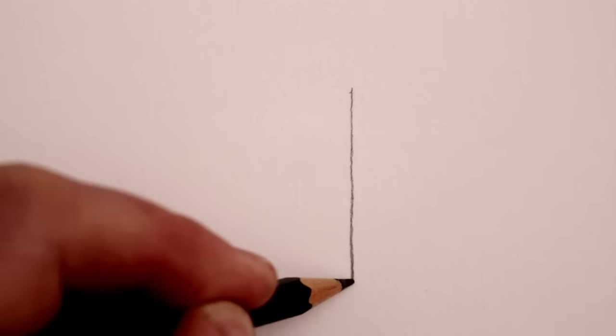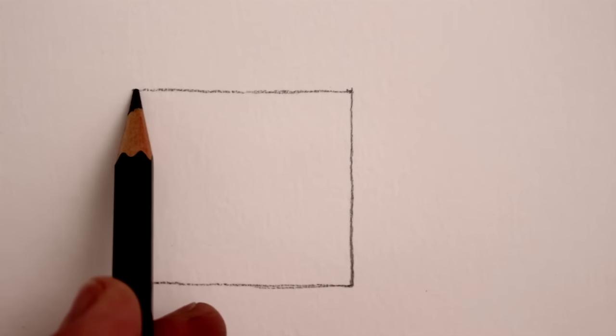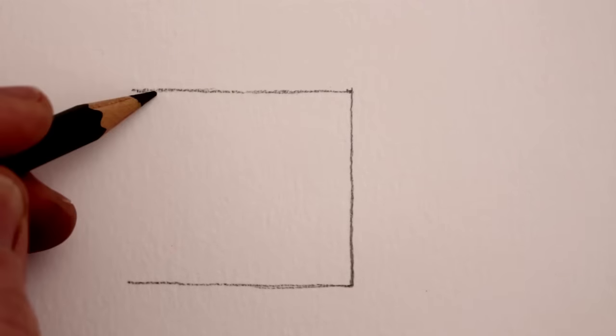To draw the first cube in a very simple way, just draw an even square. Try to make the uprights parallel with the side of your paper and then once you've got a square that you're happy with...